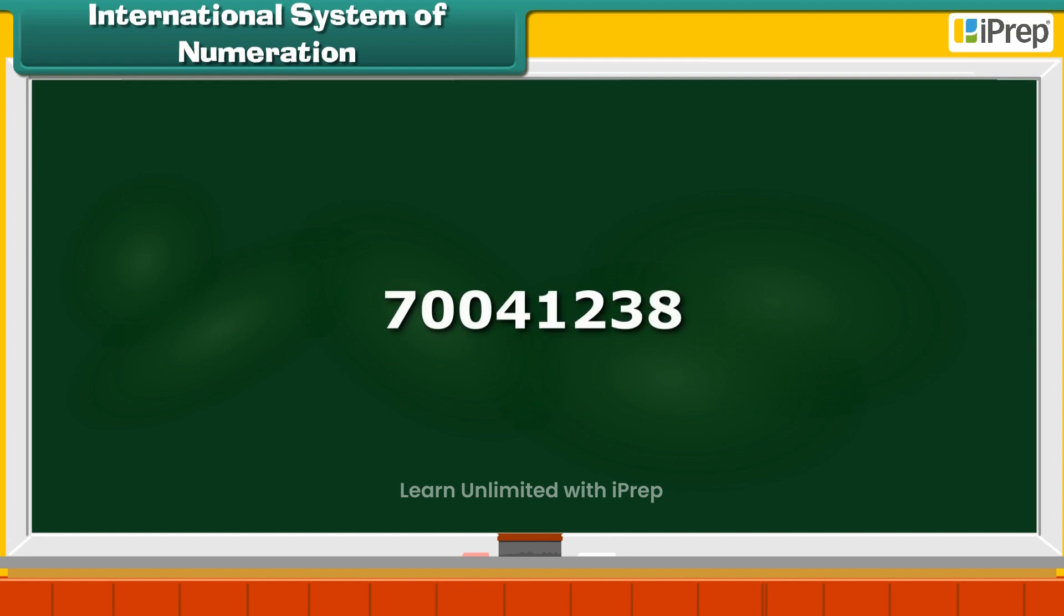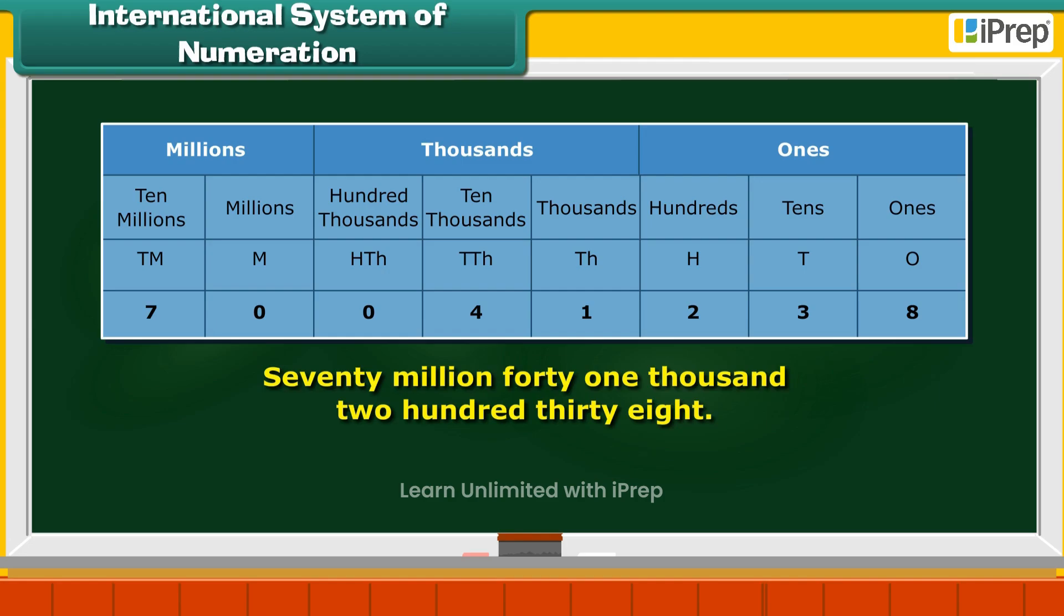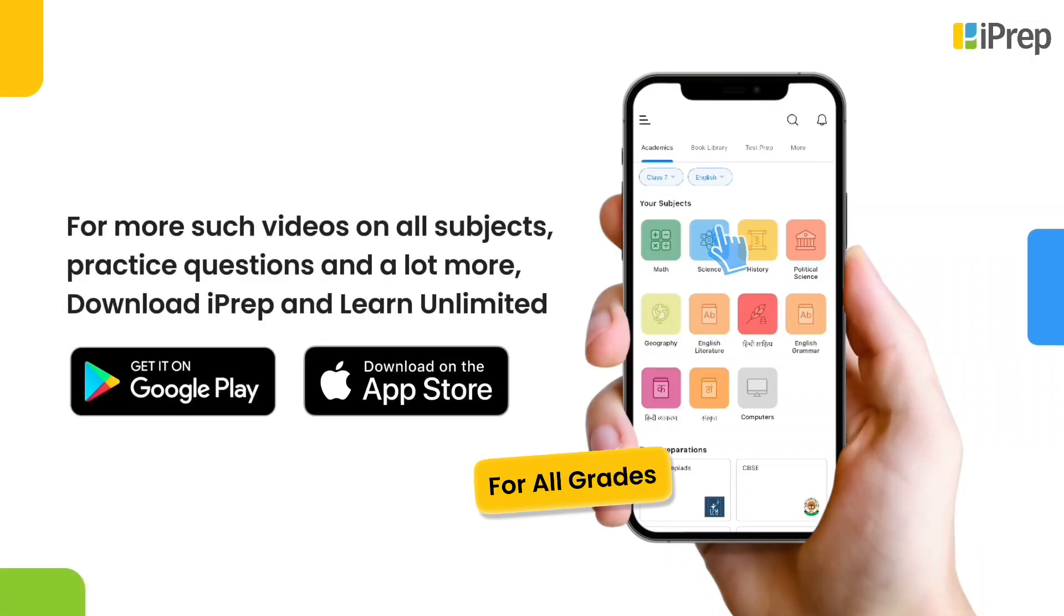Consider one more number: 70041238. Once again, we arrange it in the place value chart and then read it: 70,041,238.